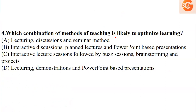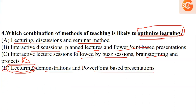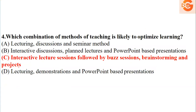Next question: which combination of teaching methods is likely to optimize learning? Option A: lecturing, discussion, and seminar — doubtful. Option B: interactive discussions, planned lectures, and PowerPoint presentations. Option C: interactive sessions followed by buzz sessions, brainstorming, and projects — yes, this has more options for optimized learning. Option D: lecturing, demonstration, and PowerPoint — lecturing alone can't give optimized learning. So option C is the correct answer.